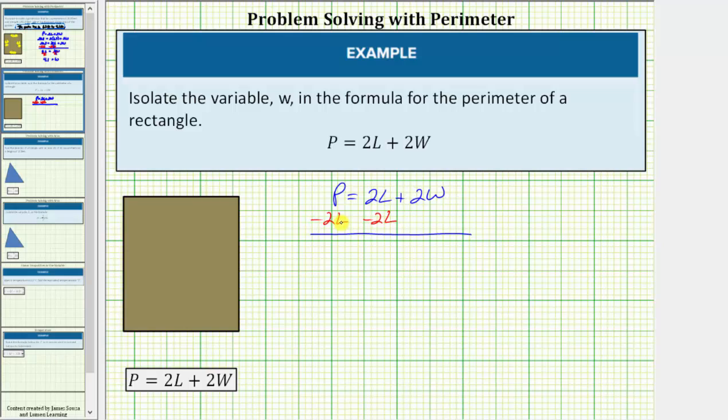On the left side of the equation these are not like terms, so we cannot perform the subtraction. This is just p minus 2l equals on the right side. 2l minus 2l is zero. The right side simplifies to 2w.